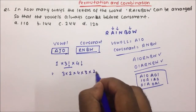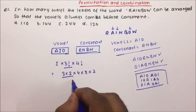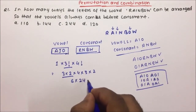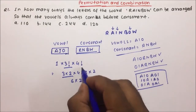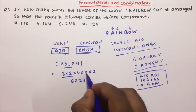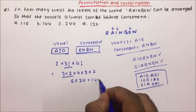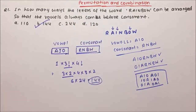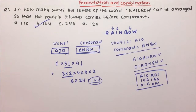And if we talk about the four consonants, they will arrange in 4 factorial ways. So 4 factorial is 4 × 3 × 2 = 24. That means the total number of ways is 3! × 4! = 6 × 24 = 144. So there are a total of 144 ways in which vowels will come before the consonants.